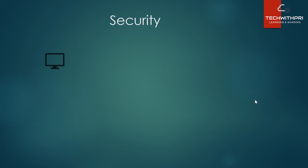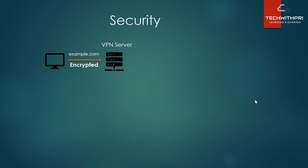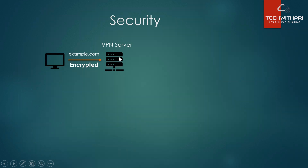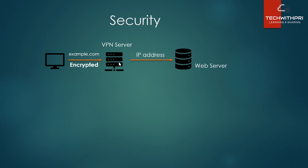Next is security — very important. For VPN, when you search for example.com, your request first goes to the VPN server and the data in transit is fully encrypted. The data travels through an encrypted tunnel to the VPN server, which then connects to the web server where example.com is hosted. VPN also hides your IP address and location.